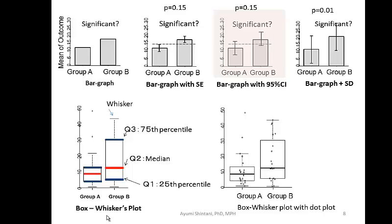How do you determine outliers in a box-whisker plot? Outliers are determined using the whiskers. The computer creates a virtual box that is 1.5 times larger than the IQR box, both above and below. The whisker is then drawn at the maximum data point falling within that extended range. Any values outside this 1.5x box are plotted as individual outlier points.